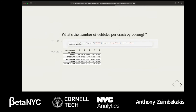The next question: the number of vehicles per crash by borough. This is a cross-table showing the percentages of vehicle counts in each borough. The most significant thing is the rather large number of two-vehicle crashes as opposed to three, four, or five vehicle crashes. Other than that, they're all pretty similar across boroughs, which makes relative sense.